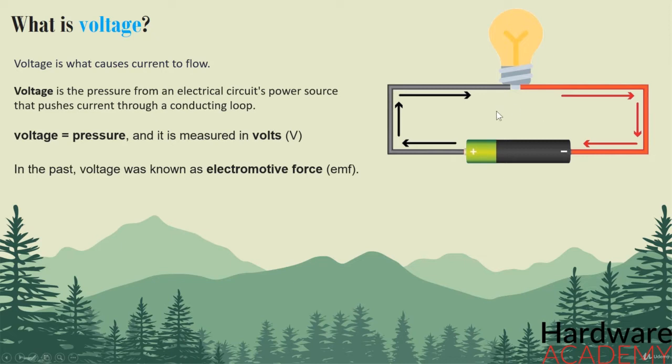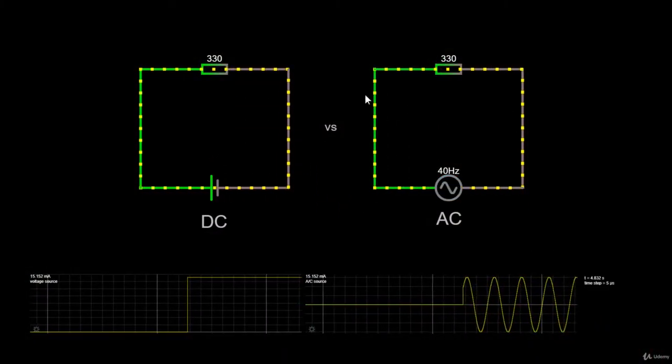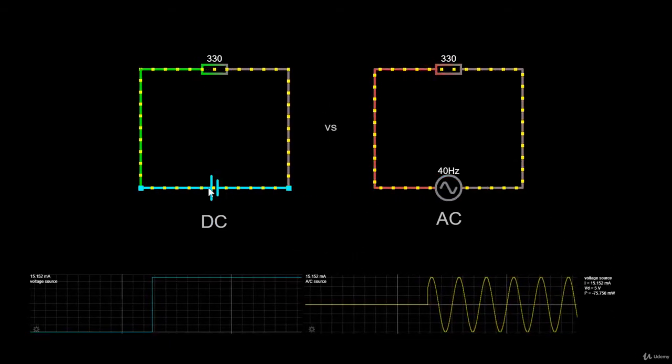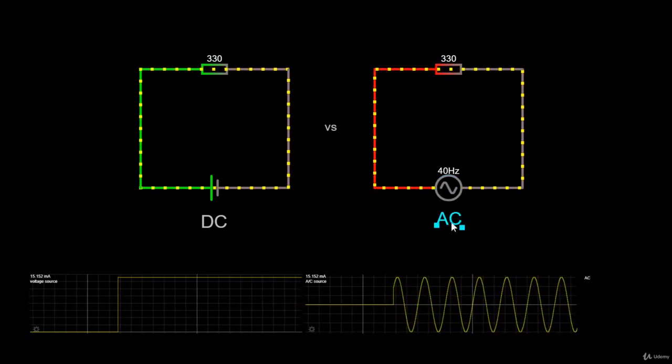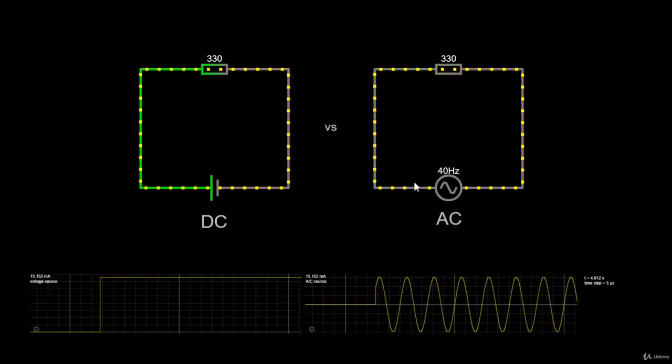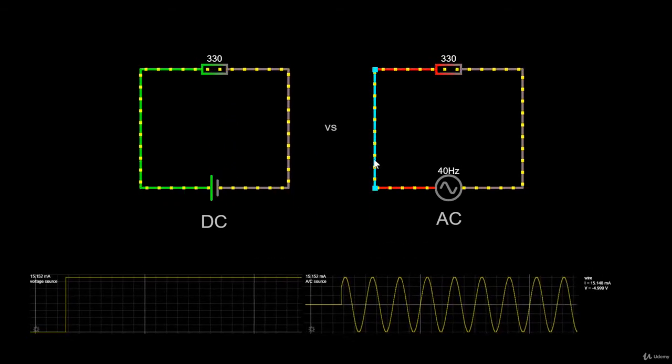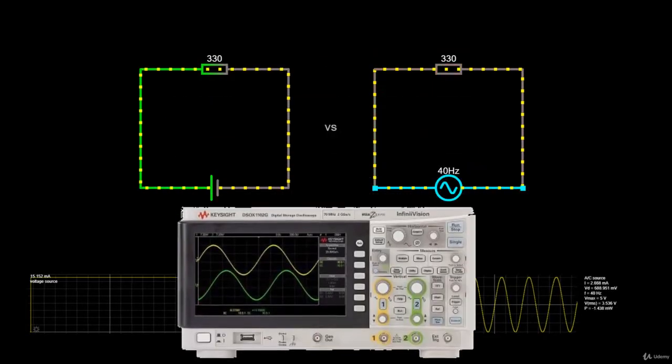Let's try to visualize this different type of current flow in the circuit with the help of our simulator. Alright, here we are. The first circuit uses a simple battery. Remember that the battery will always produce a DC voltage, while on the other circuit, we use an AC power source.